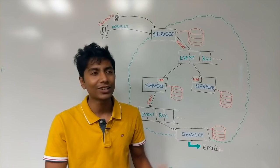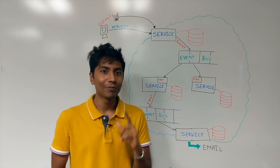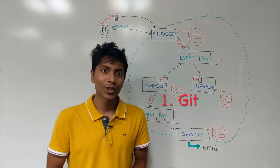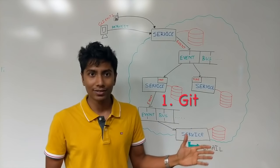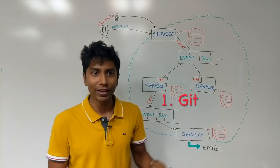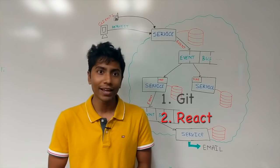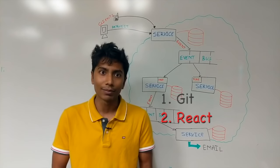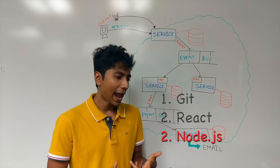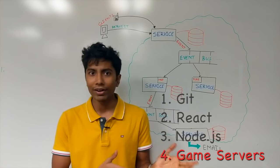Looking at these architectures, you might wonder why would you ever use this. The most popular event-driven architecture I can think of is Git — Git uses events which are like commits to get its way through its history. There's also React, which JavaScript fans probably know about, Node.js on the server side, and many gaming systems also use event-driven architecture.